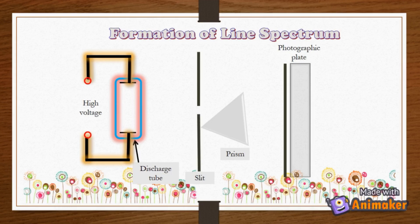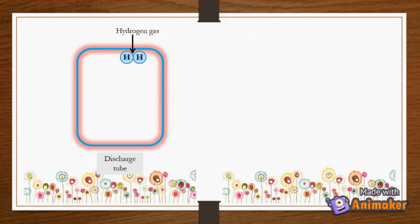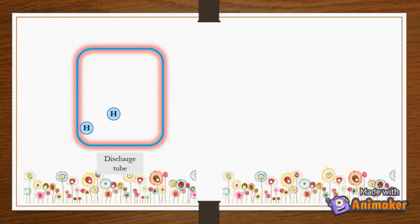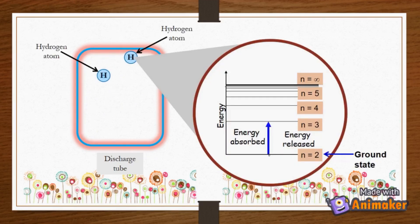For the following experiment studying the emission spectra of atoms and molecules, these are the apparatus used. It starts with discharge tubes filled with hydrogen gas. When a high voltage of electrical discharge is supplied, the hydrogen molecules decompose into hydrogen atoms. The electron in hydrogen atoms absorbs the energy and is promoted from a lower energy level to a higher energy level. This energy level is called the excited state. The electron at the excited state is unstable, and it will fall back to a lower energy level and release a specific amount of energy in the form of light.